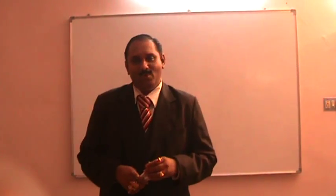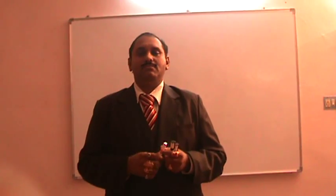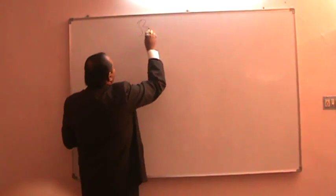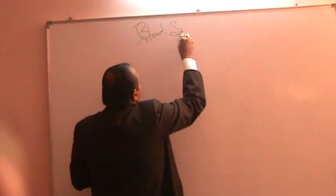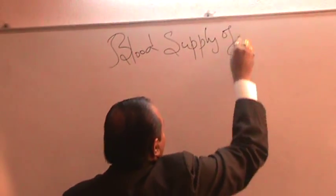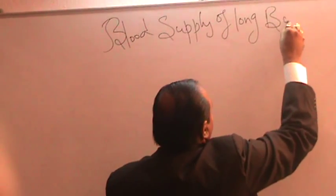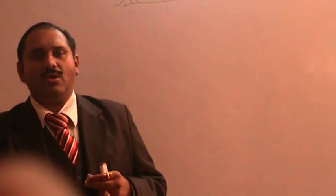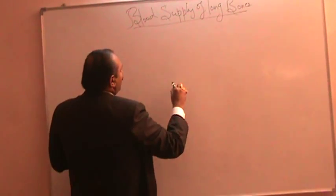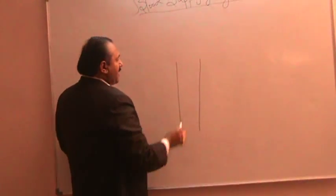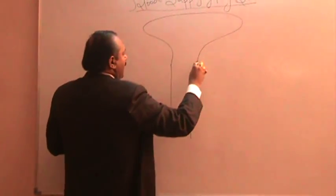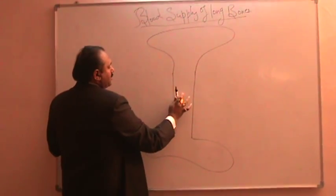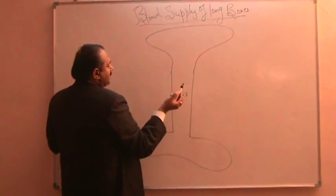Welcome to the next session. This is about the blood supply of long bones — a very frequently asked question. First, let us draw a long bone. A long bone has a shaft, which is also called the diaphysis, and it has epiphyseal ends above and below.